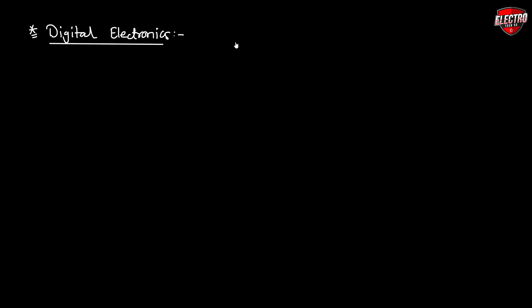Hello dear student, welcome back to the lecture series of digital electronics. In the previous video we had discussed some of the binary codes which are used in digital communication. In this video we are going to discuss about the gray code. Gray codes are given by Frank Gray, who is a physicist and researcher in AT&T Bell laboratory, and he developed gray codes which are very useful in television communication.